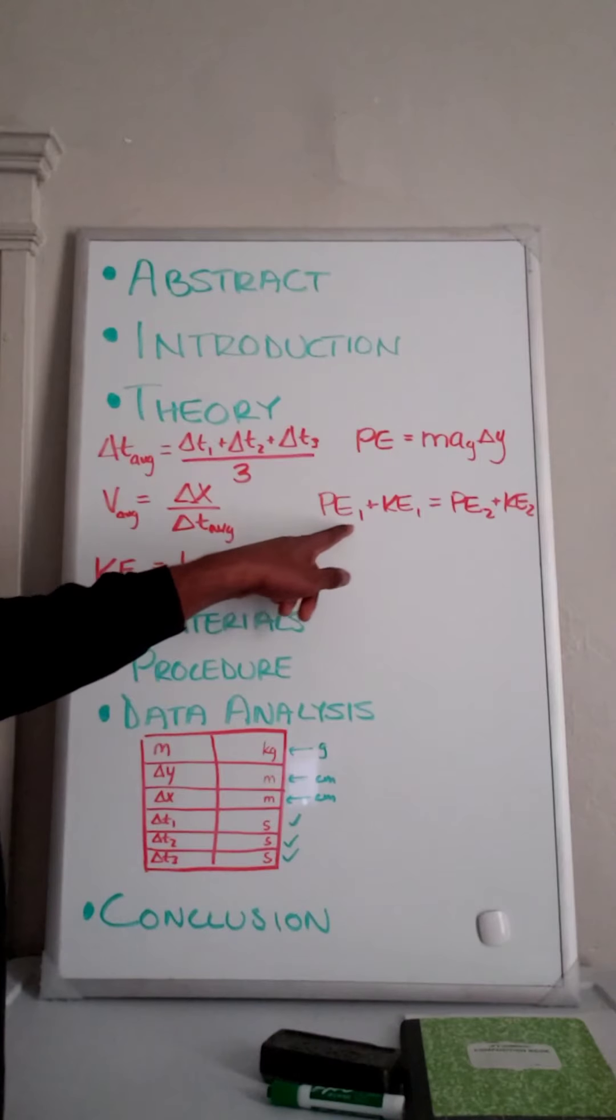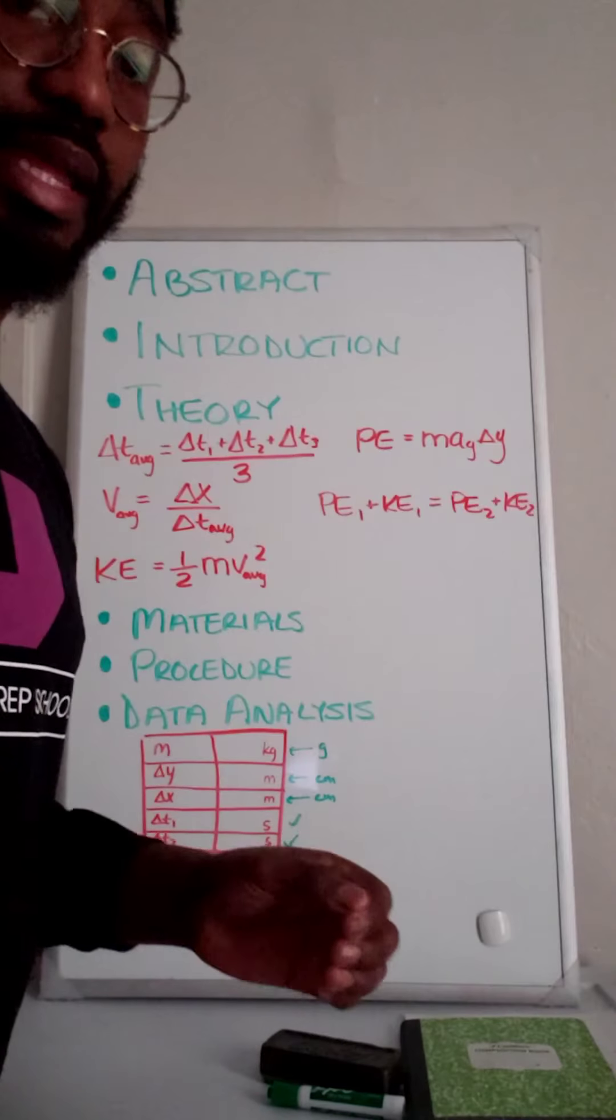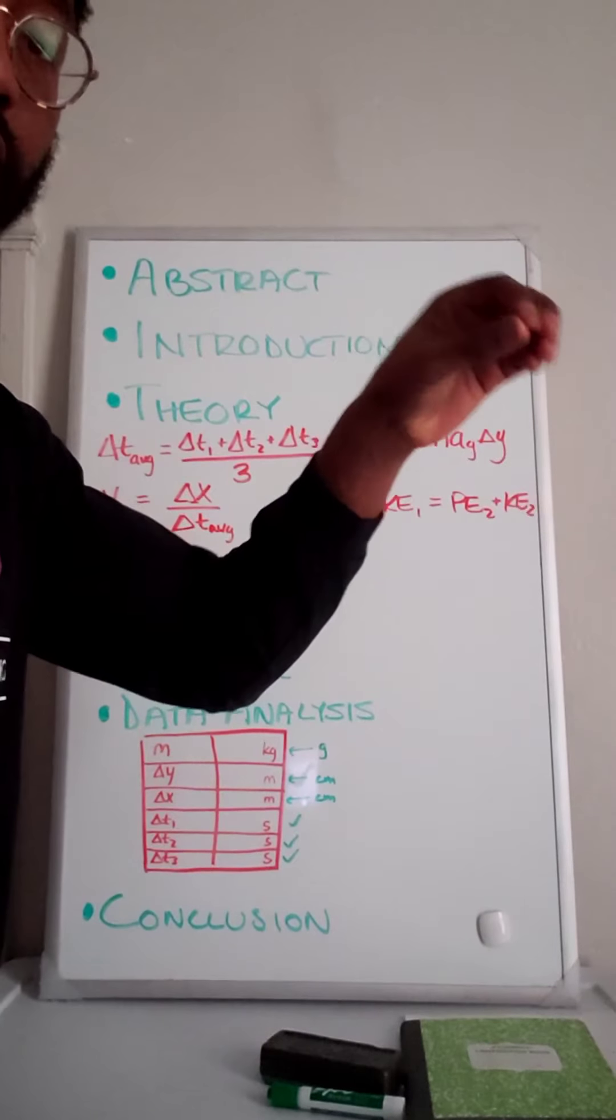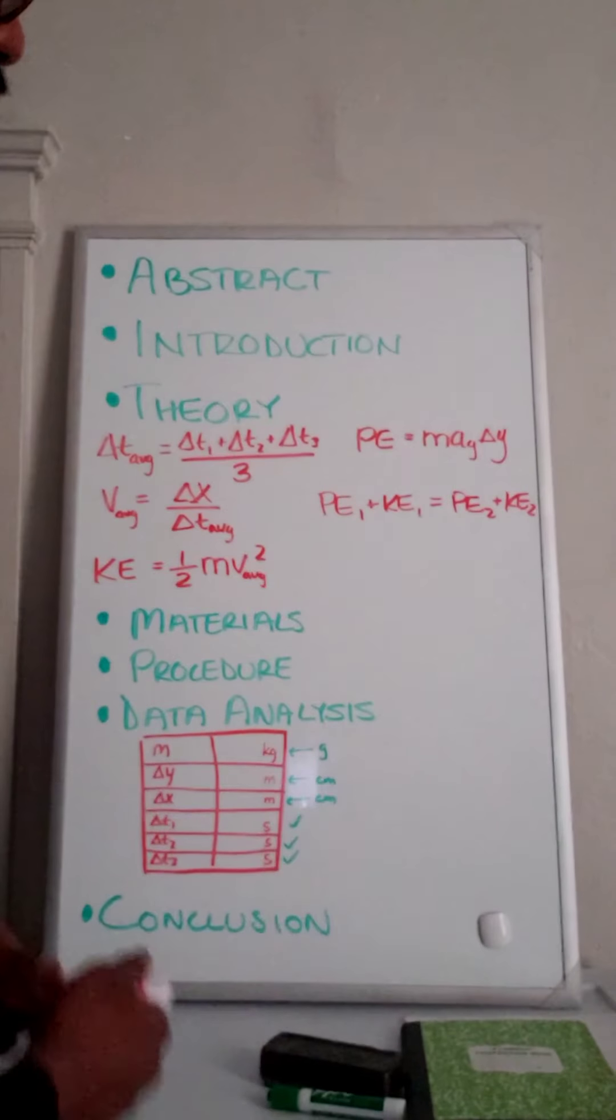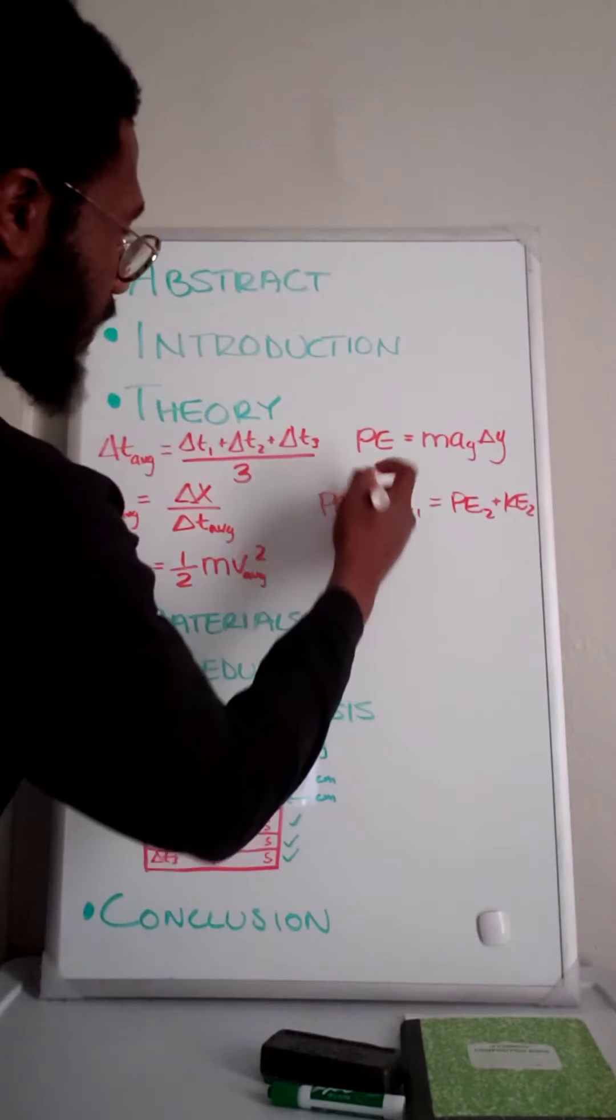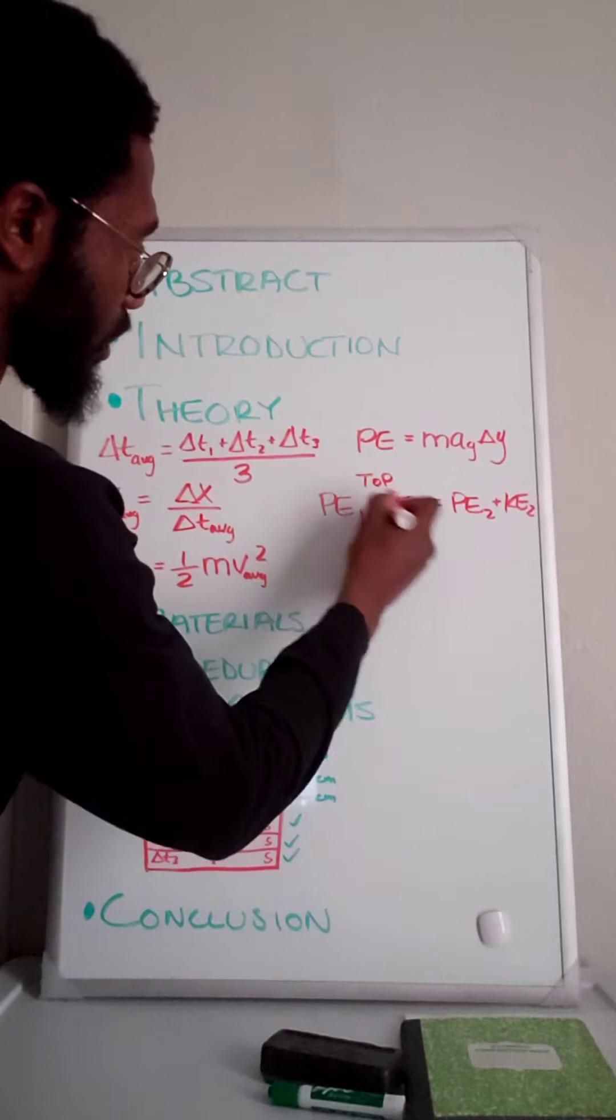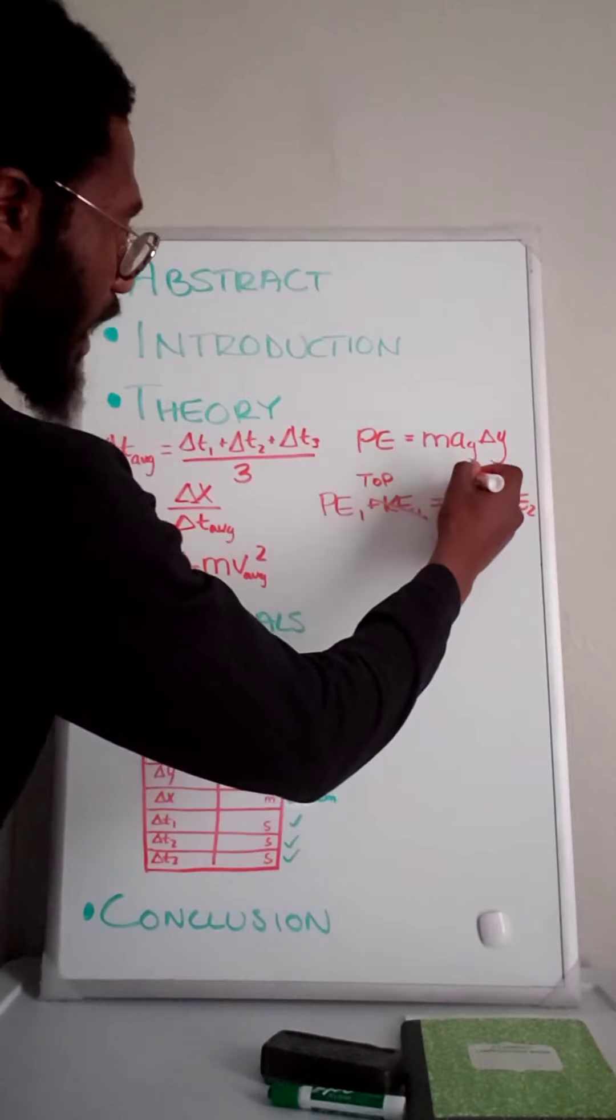The car has potential energy but it has zero kinetic energy because it's not moving when it's sitting at the top of the ramp. So we know that at the top, kinetic energy equals zero.